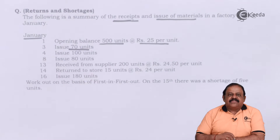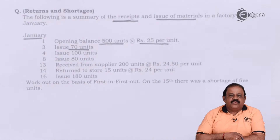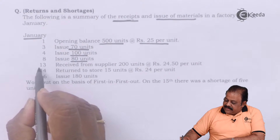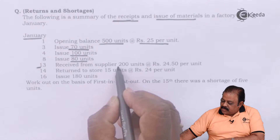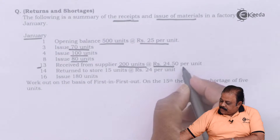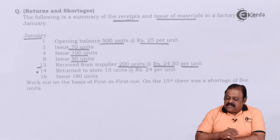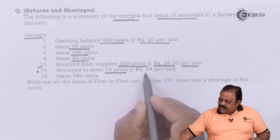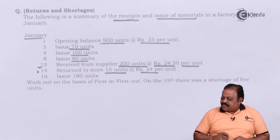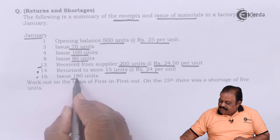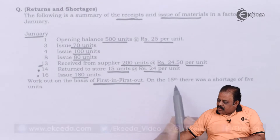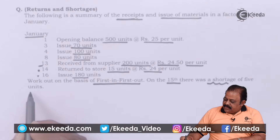Out of the 500 units, 70 units are issued. On 8th January, there is an issue of 100 units; on 8th, an issue of 80 units. On 13th, received from supplier 200 units at the rate of rupees 24.50 per unit. On 14th, return to stores of 15 units at the rate of rupees 24 per unit. On 16th, there is an issue of 180 units. On 15th, there was a shortage of 5 units. Workings are on the basis of First In First Out (FIFO).